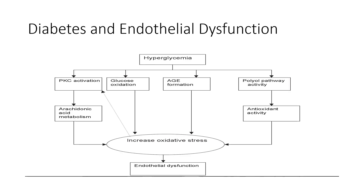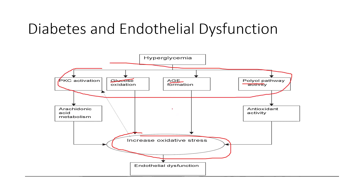Just a breakdown of what we see with hyperglycemia. There are a lot of different mechanisms involved: PKC activation, glucose oxidation, advanced glycation end products — we'll talk about those in a second — and the polyol pathway. We see increased oxidative stress, which uncouples the enzymes in the endothelium, leading to endothelial dysfunction. Hyperglycemia leads to a lot of pathological changes that ultimately produce increased oxidative stress and endothelial dysfunction.